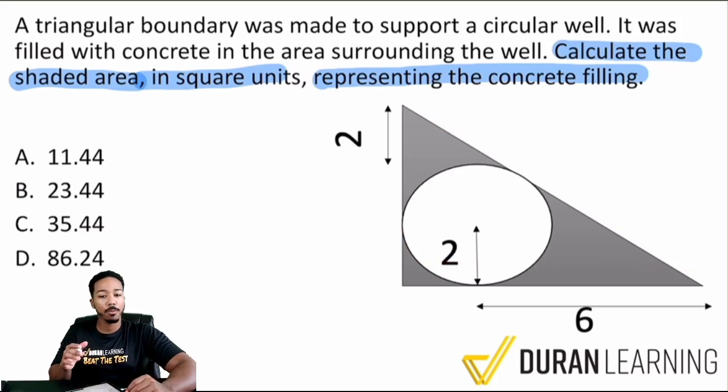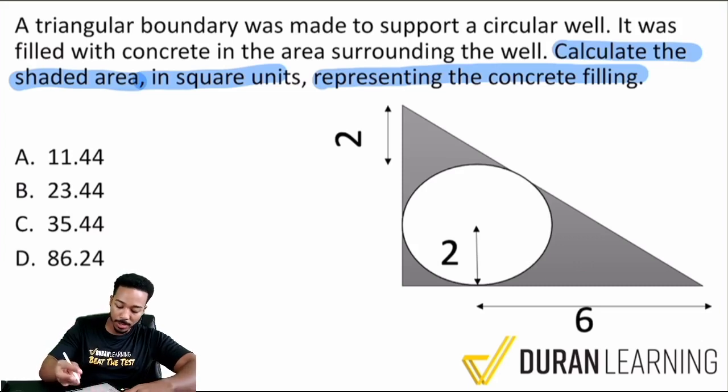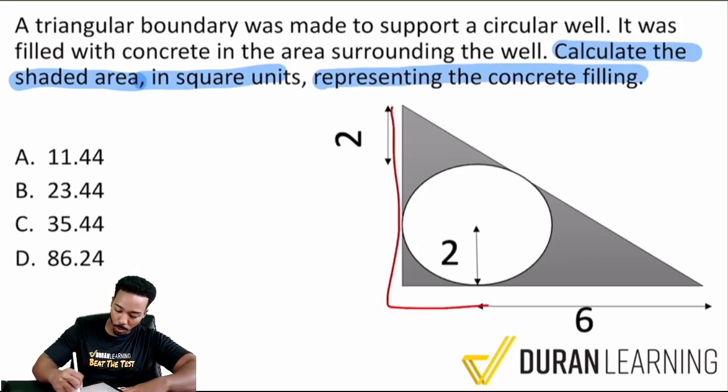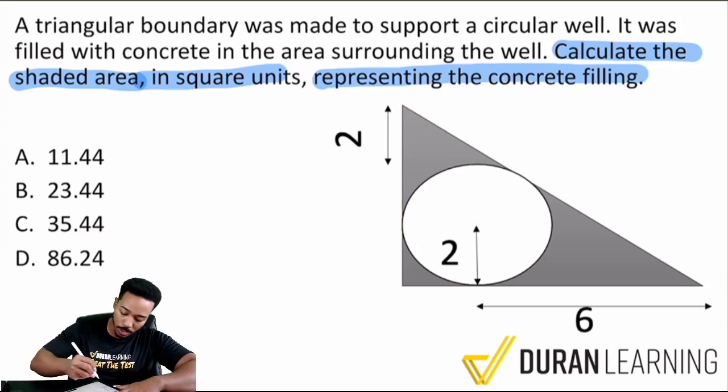And so the goal of the problem is again, calculate the shaded area. So let's keep things simple here. What we can do here is we can flat out say, we can find out what the area of the whole triangle is. And then we can take out that circular section on the inside. And that's exactly what we're going to do.